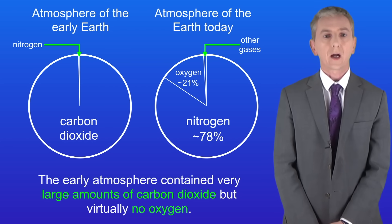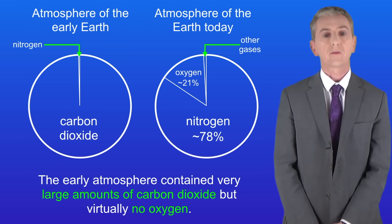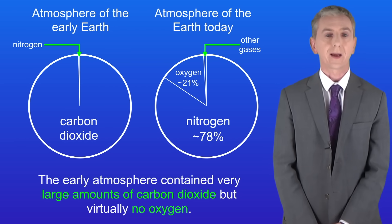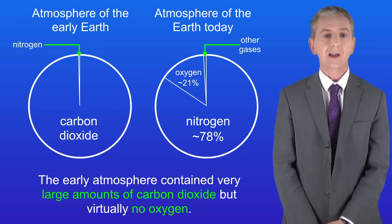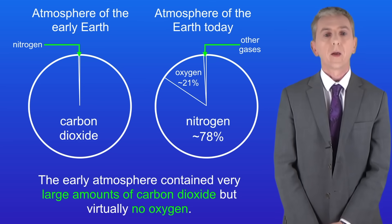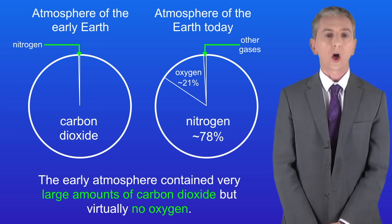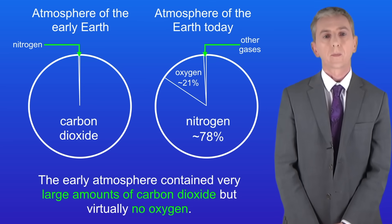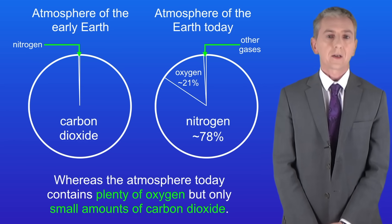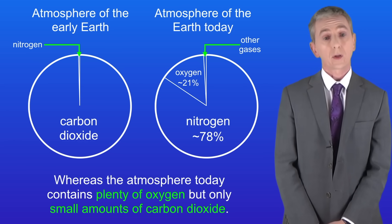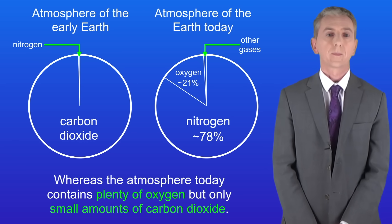In the last video we looked at how the levels of gases in the atmosphere have changed over time. We saw that the early atmosphere contained very large amounts of carbon dioxide but virtually no oxygen, whereas the atmosphere today contains plenty of oxygen but only small amounts of carbon dioxide.